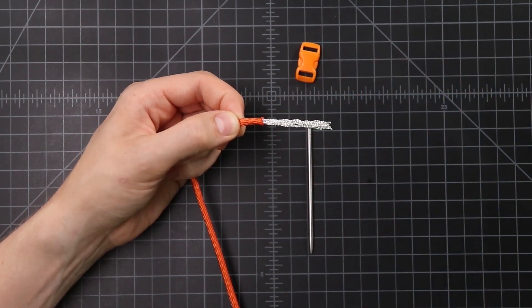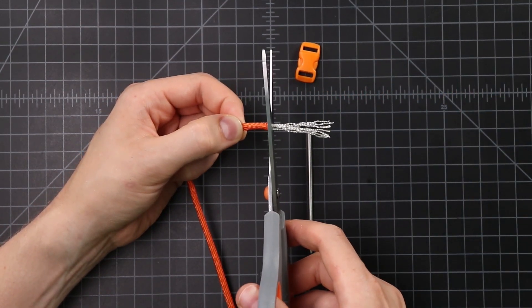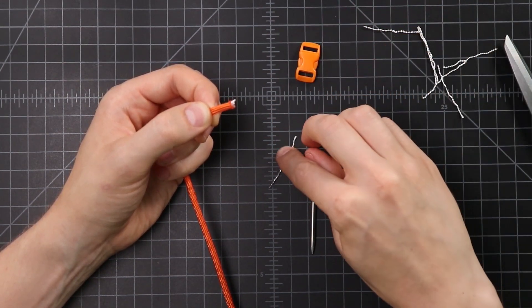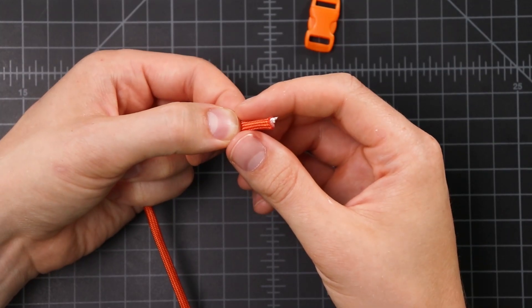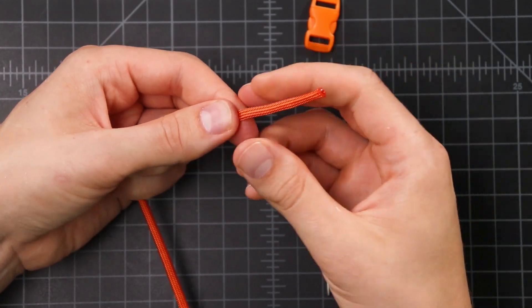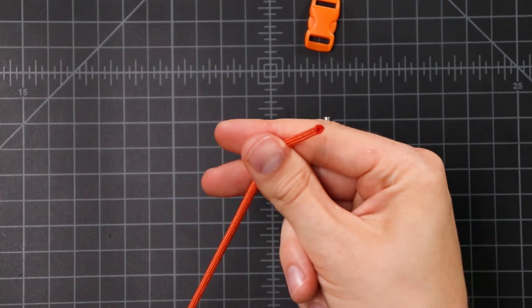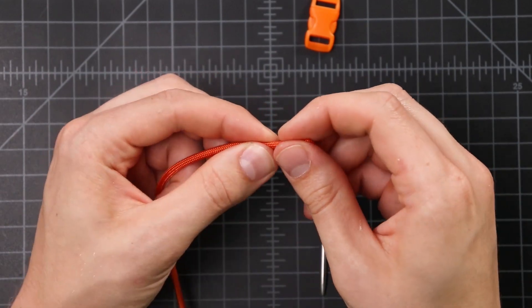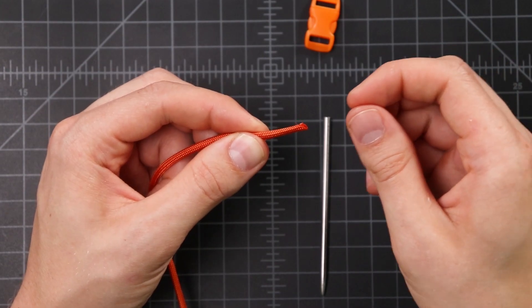But then we want the inner strands to come out. So pull them out about 2 inches, and clip them. And then once you've clipped those, pull the sheath back over the end. And you want about an inch of cord without the innards on the end.